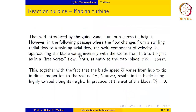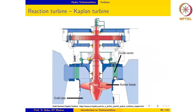The swirl introduced by the guide vanes is uniform across its height. In the following passage, the flow changes from being a swirling radial flow to a swirling axial flow. The swirl component of velocity v-theta approaching the blade varies inversely from hub to tip as in a free vortex flow, owing to conservation of angular momentum. So at entry to the rotor blade, r times v-theta is a constant.